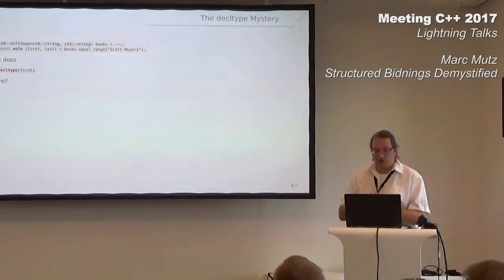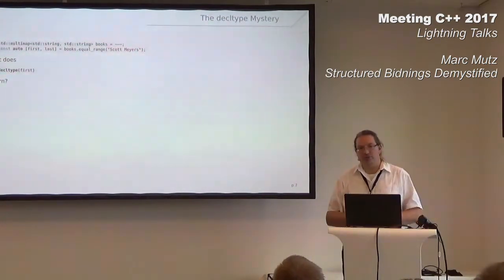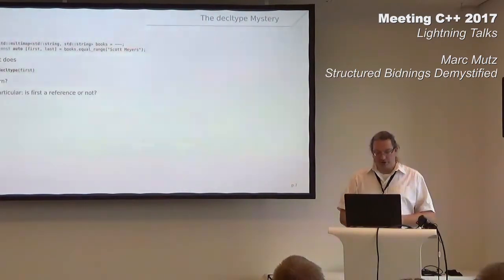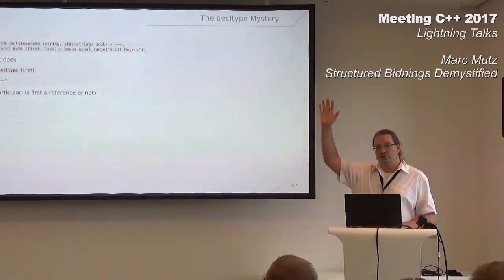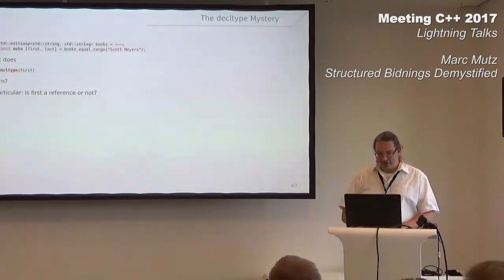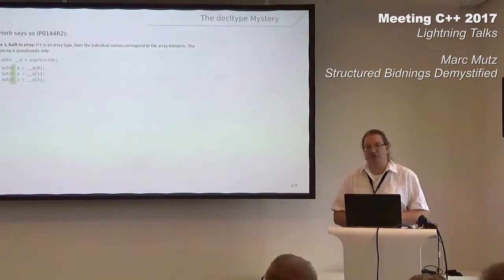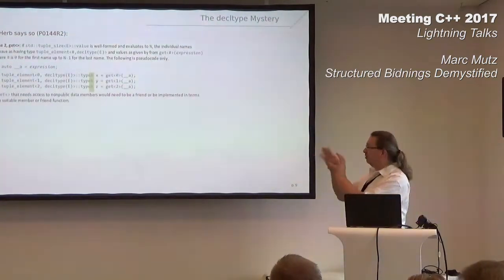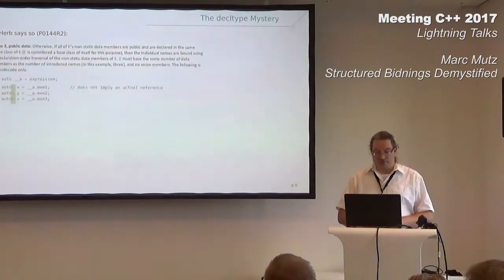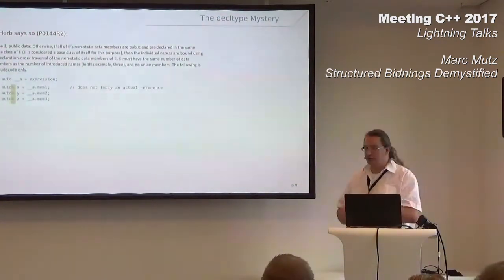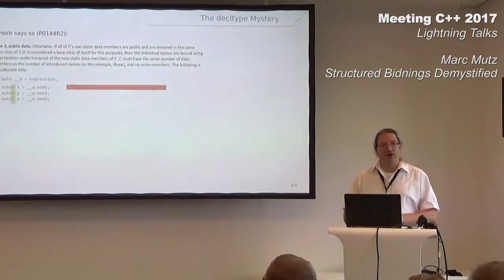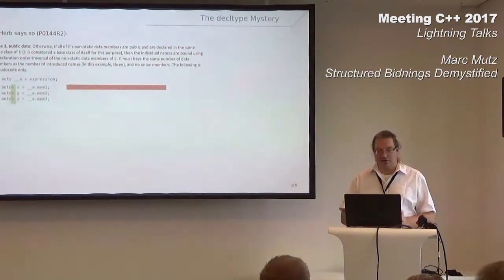Now the decltype mystery. Given the beginning of our code, what does decltype of 'first' return — in particular, is it a reference or not? Who thinks it's a reference? Who thinks it's something else? The rest don't know. It's not a reference — but the paper P0144 says they are 'auto reference,' and for tuples, type reference, and for members of an aggregate, a reference — but also says this does not imply an extra reference. So what's going on — is it a reference or not?